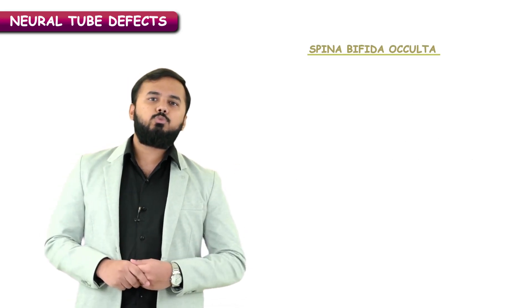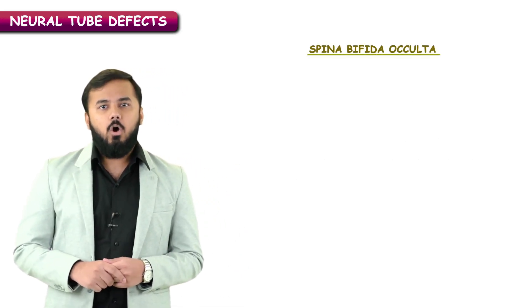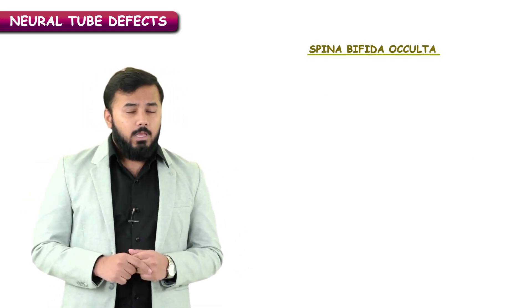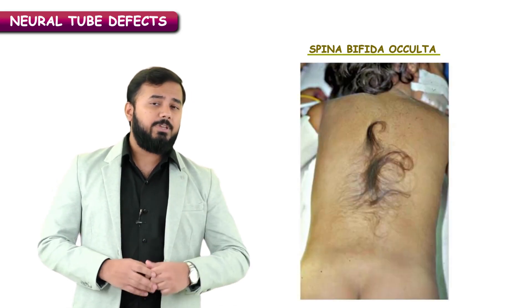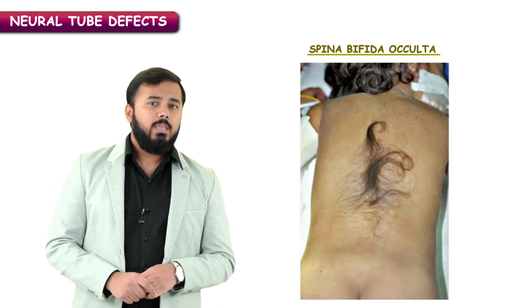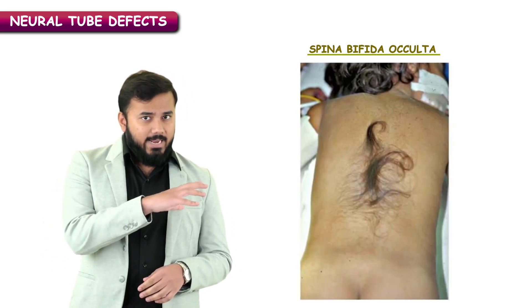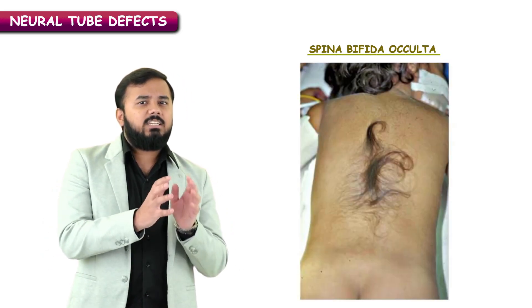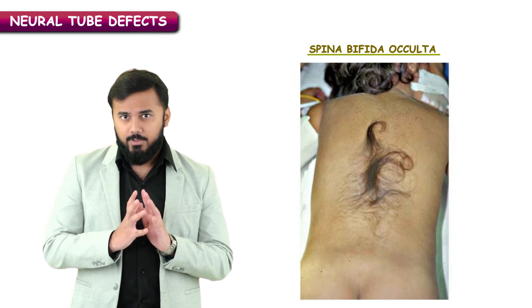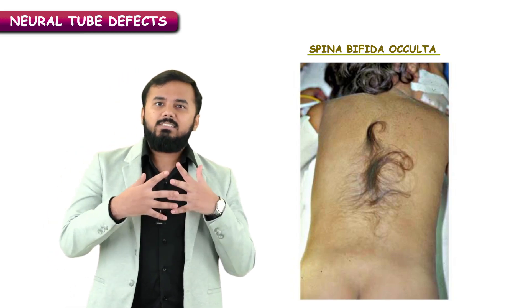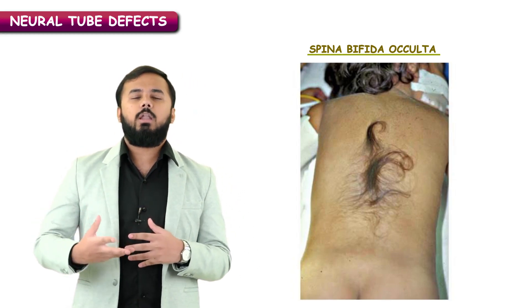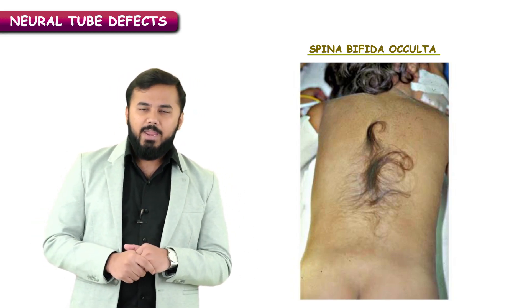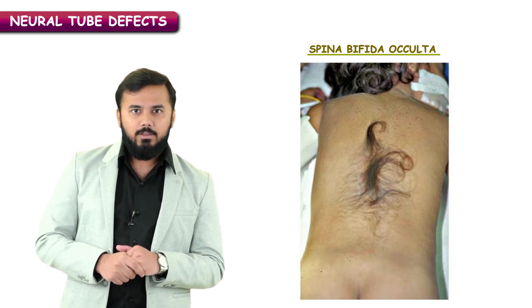The first type is spina bifida occulta. In spina bifida occulta, you can see in the picture that in the lumbosacral region there is a tuft of hair. This tuft of hair is what characterizes spina bifida occulta.